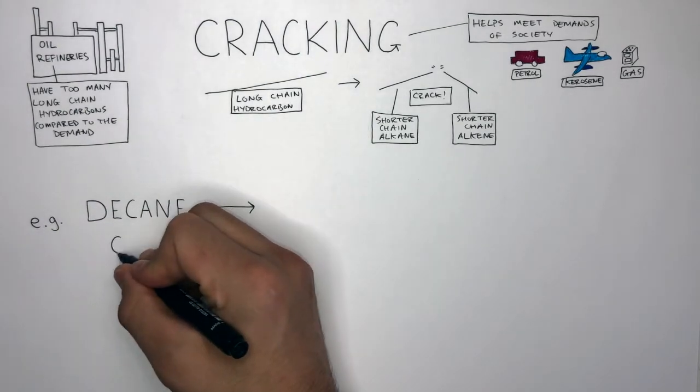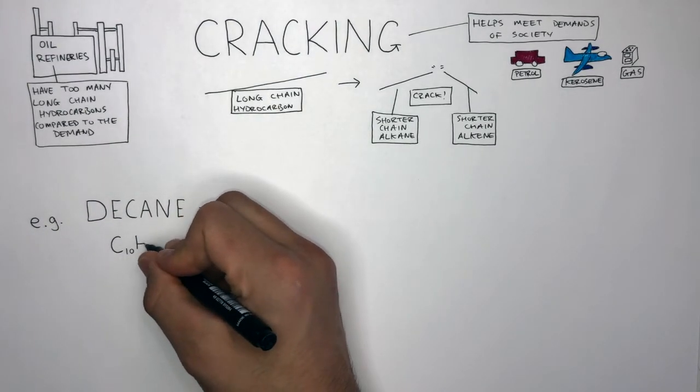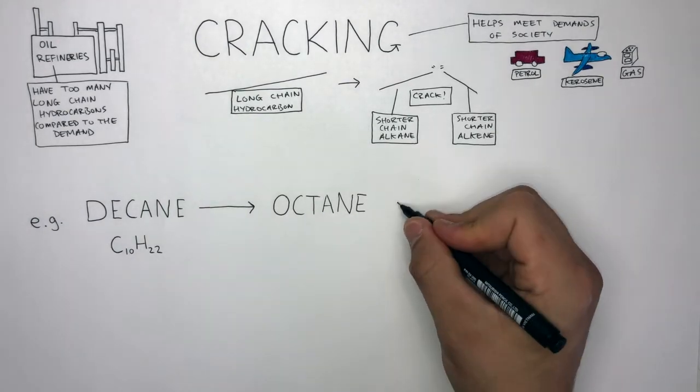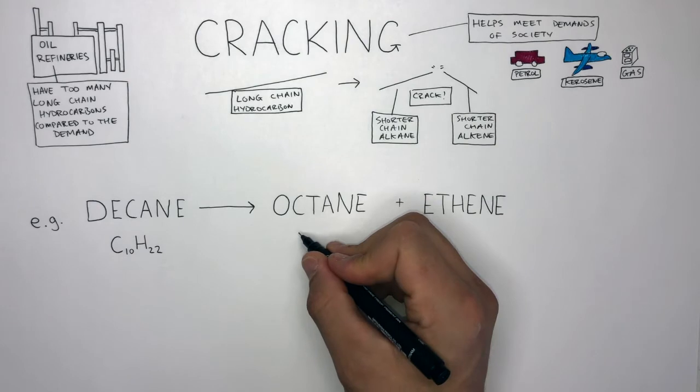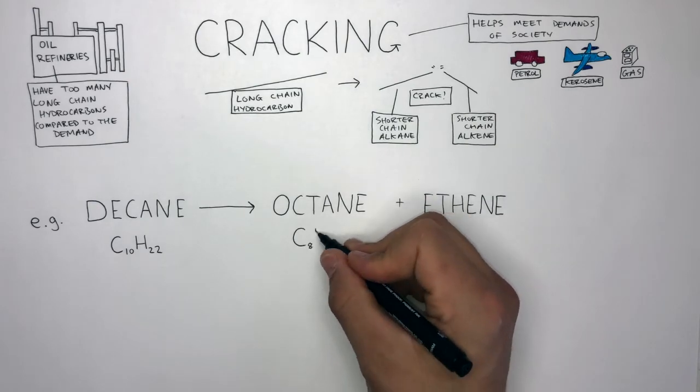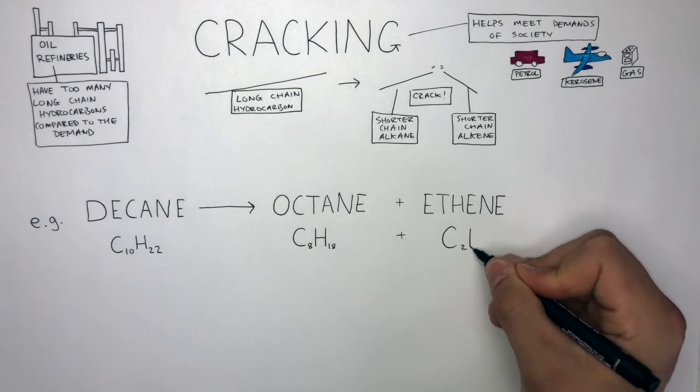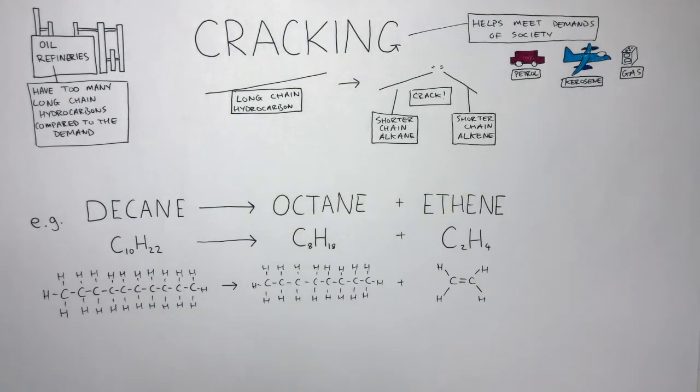For example, decane, which has a formula of C10H22, can be cracked into octane and ethene. The chemical formula of octane is C8H18 and ethene is C2H4. The displayed formula of decane is C10H22.